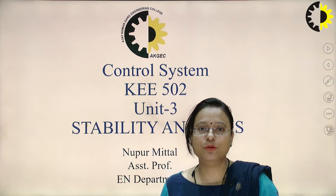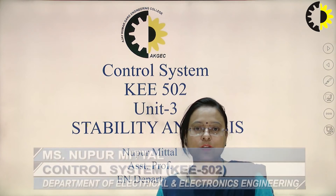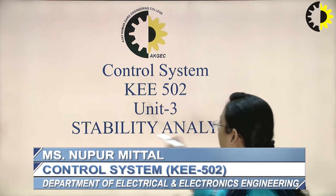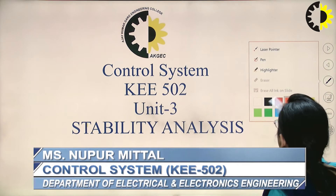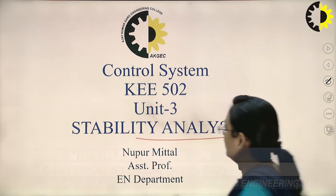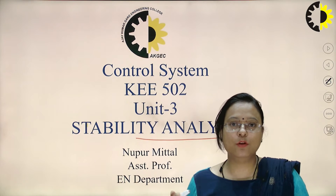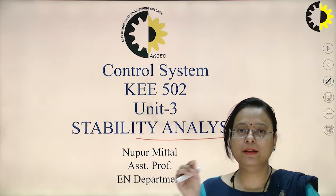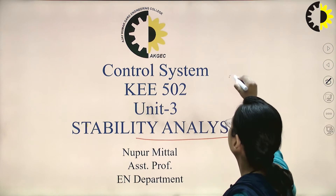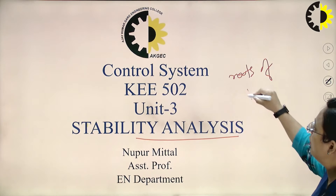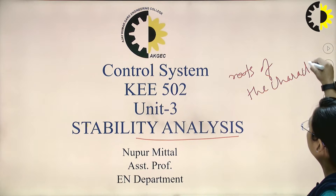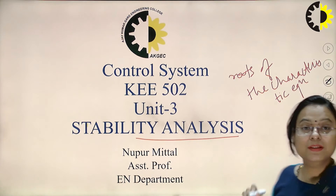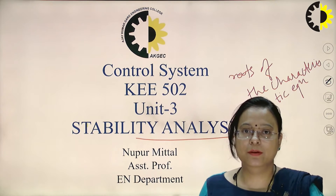Jai Hind everyone. Today I am going to start another unit of the control system which is related to stability analysis. Stability analysis of the closed loop control system can be determined in the S-plane by determining the roots of the characteristic equation. If the roots lie on the left hand side, the system is said to be stable; otherwise unstable.